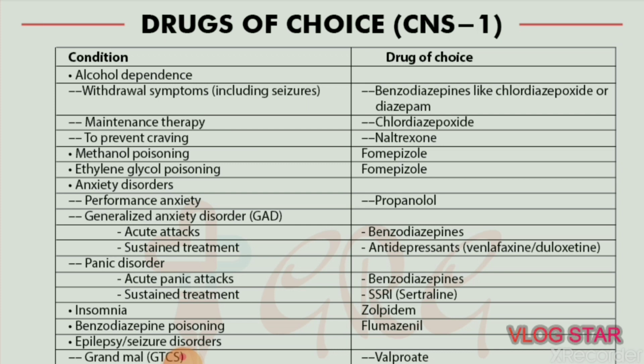Next, anxiety disorders. For performance anxiety, the drug of choice is propranolol. For generalized anxiety disorder (GAD), acute attacks — drug of choice is benzodiazepines. For sustained treatment of GAD, the drug of choice is antidepressant drugs.